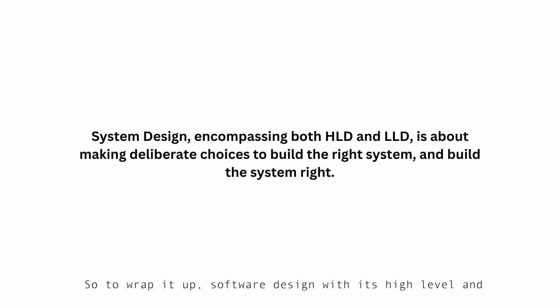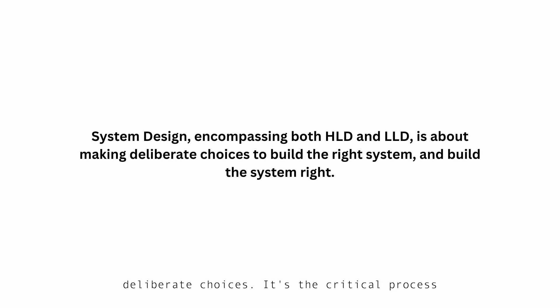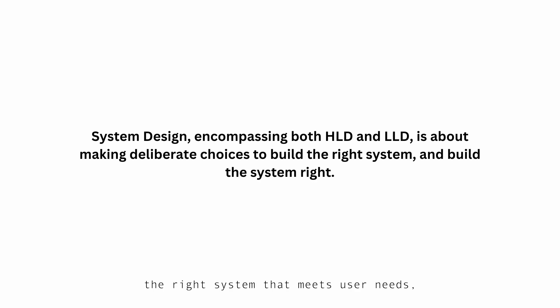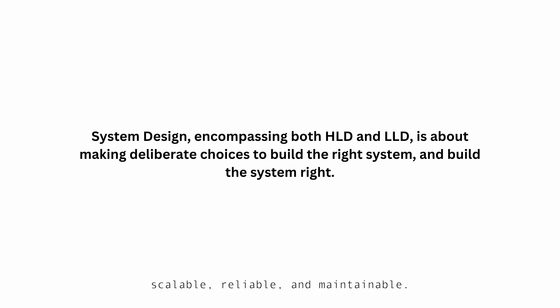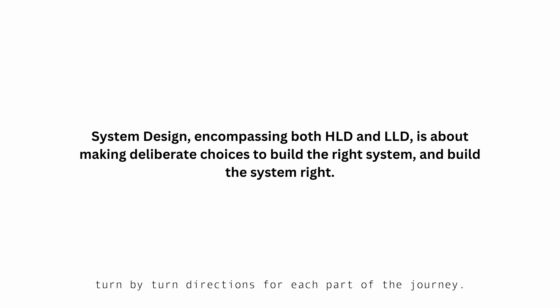To wrap it up, software design with its high level and low level aspects is all about making thoughtful, deliberate choices. It's the critical process of creating a blueprint to ensure we not only build the right system that meets user needs, but also that we build the system right — making it scalable, reliable, and maintainable. HLD gives you the map, and LLD gives you the turn-by-turn directions for each part of the journey.